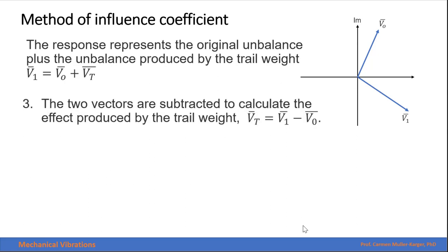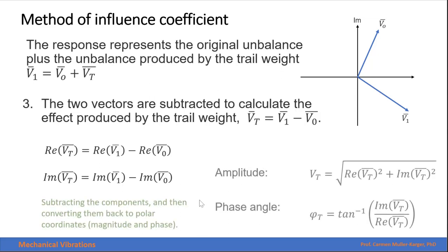In step 3, we will subtract both vectors to calculate the effect produced only by the trial weight. We have the subtraction in the Cartesian coordinates. And then we can convert back to polar coordinates, calculating the magnitude and the phase angle of this vector. Graphically, we can see that the original unbalance plus the unbalance produced by the trial weight will be the vector that we measure in the second run.